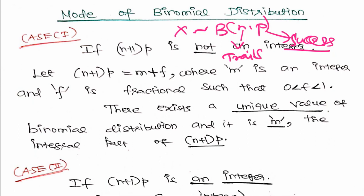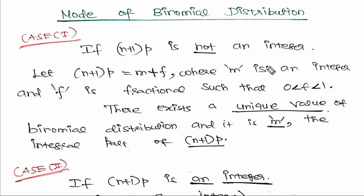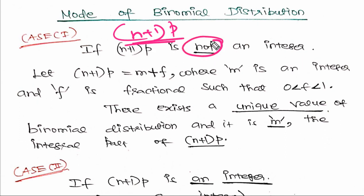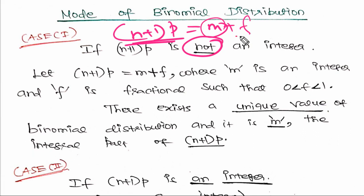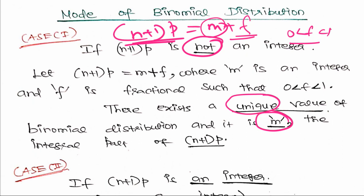Now for the mode of the binomial distribution. The mode value is determined by n+1 into p. When n+1 times p gives values like 6.5, 4.5, 3.5, or 3.45, which are non-integers, then m = integer part and we get a unique mode. If n+1 times p is not an integer, there is a unique mode.